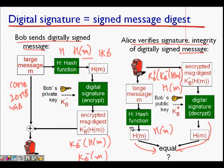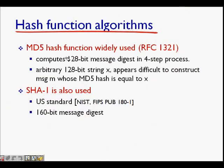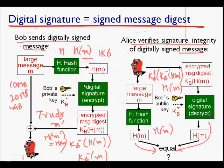This way, the message digest becomes smaller and it is much easier to process. This is also secure because it is infeasible for anyone like Trudy to find an M-dash for which H(M-dash) equals H(M), so no one can forge that message. MD5 is one hash function that produces a 128-bit message digest, and SHA-1 produces a 160-bit message digest. That is the digital signature using hash functions.